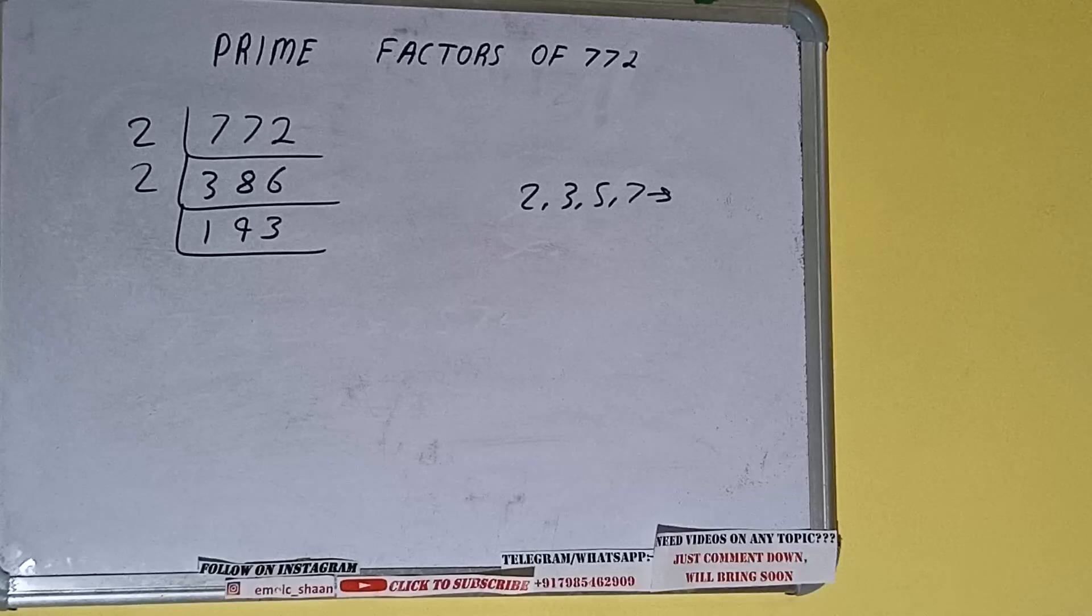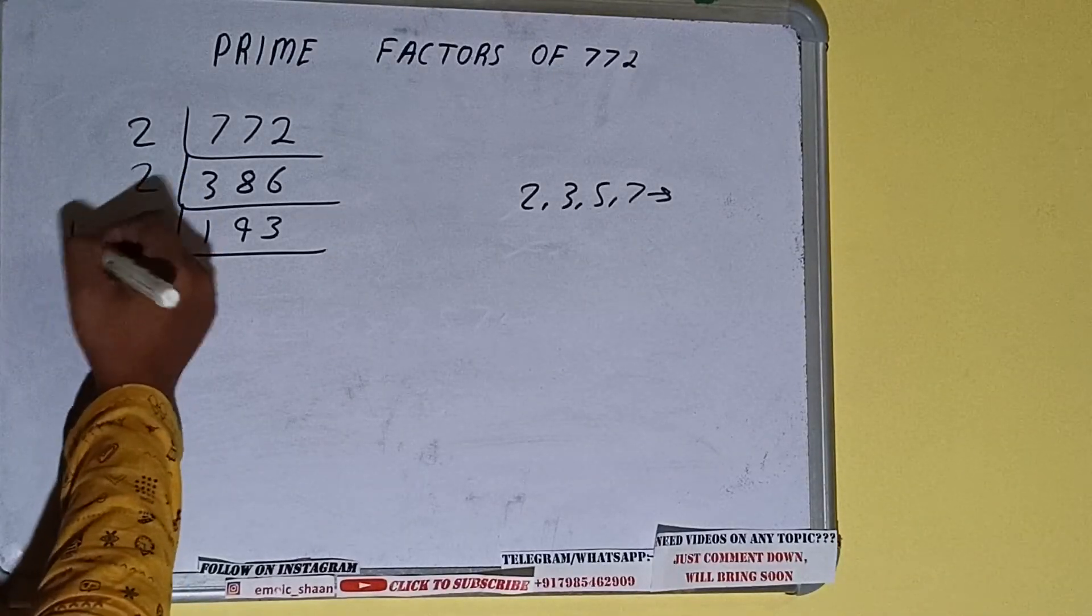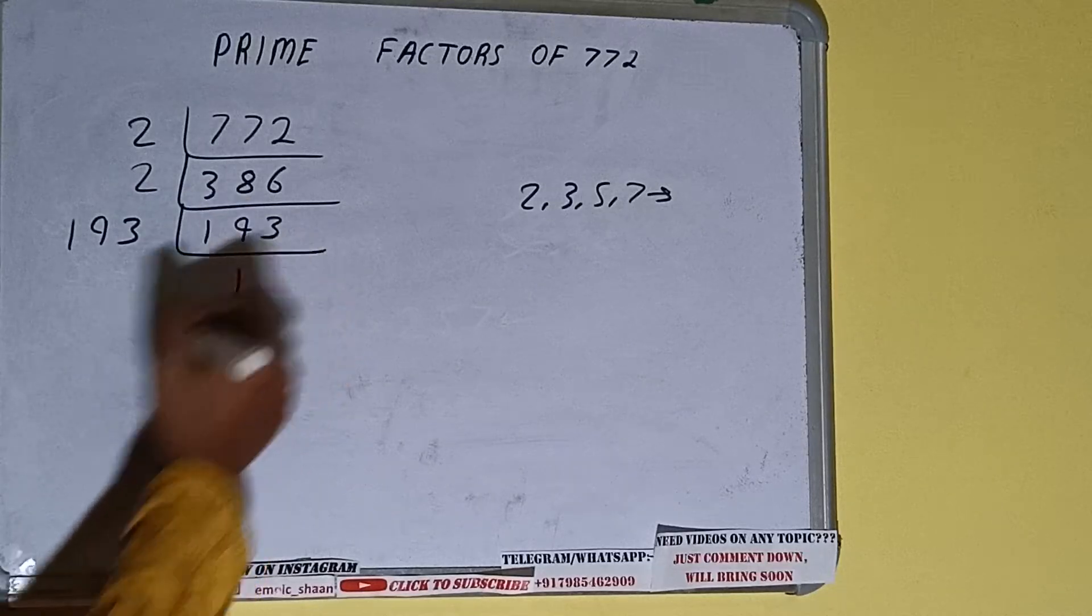Is 193 divisible by 2? The answer is no, because the number is odd. And the number 193 is also a prime number, so it is only divisible by itself. That is 193, and once we do so we'll be getting 1.